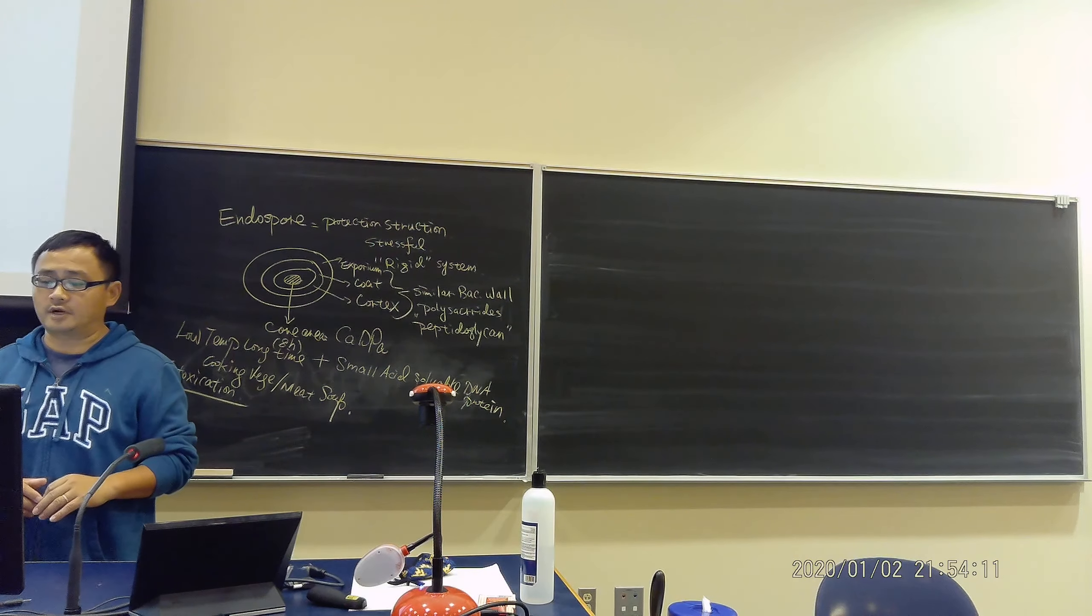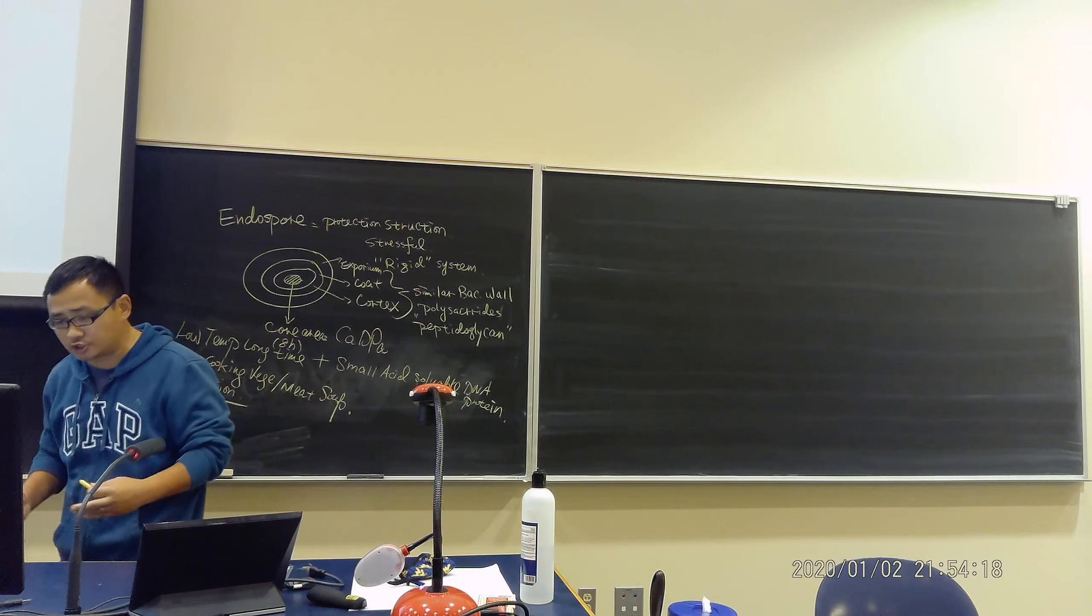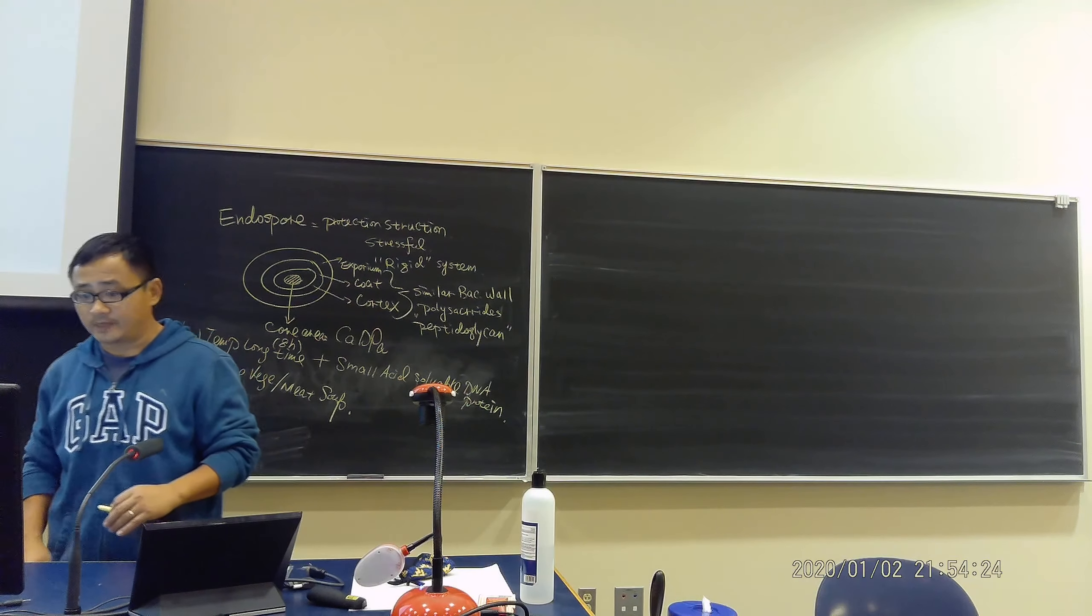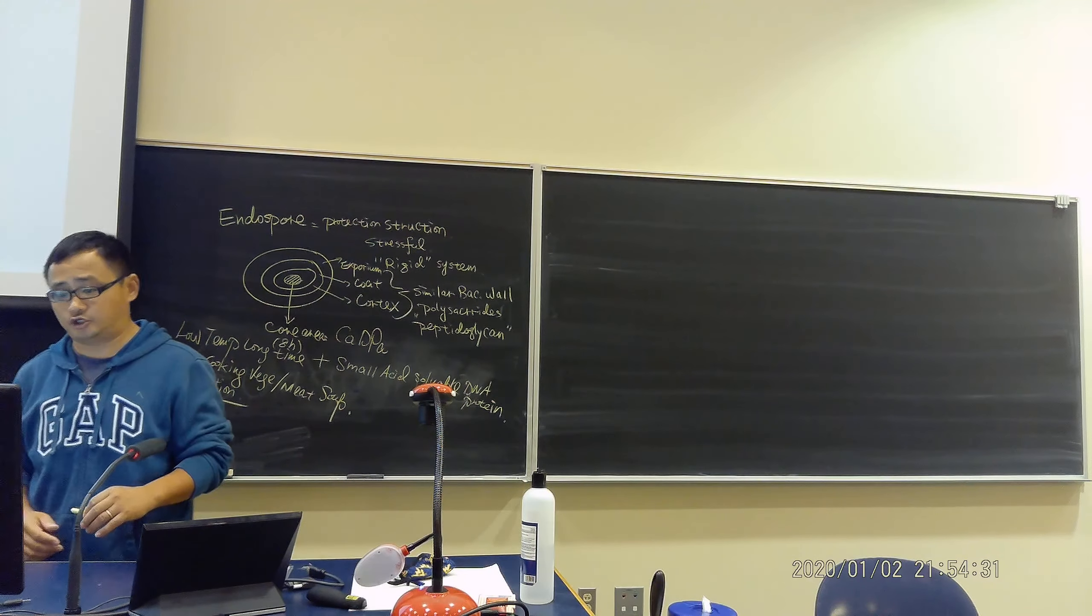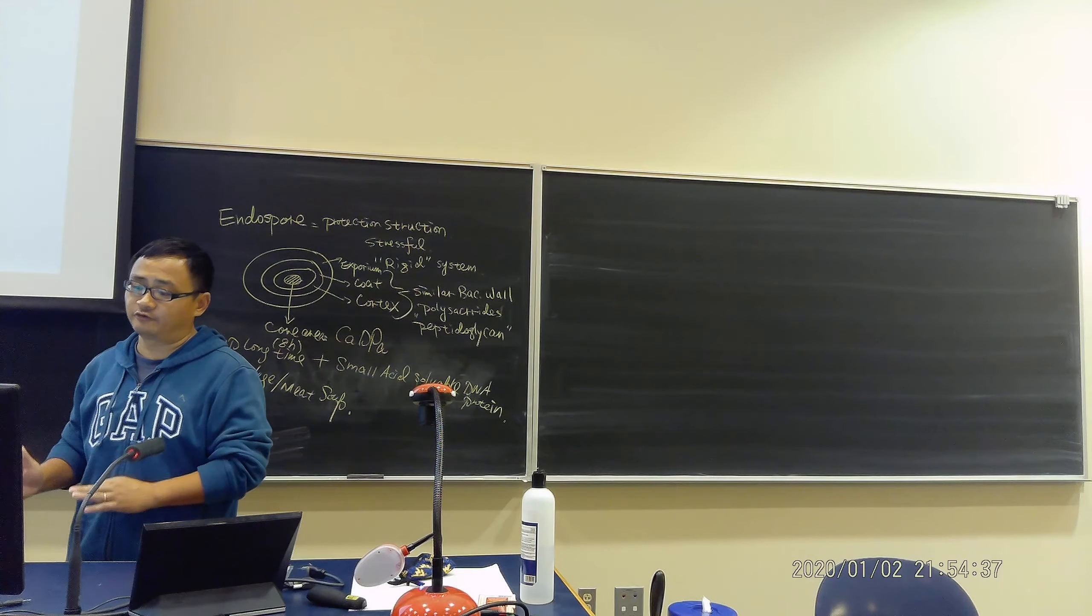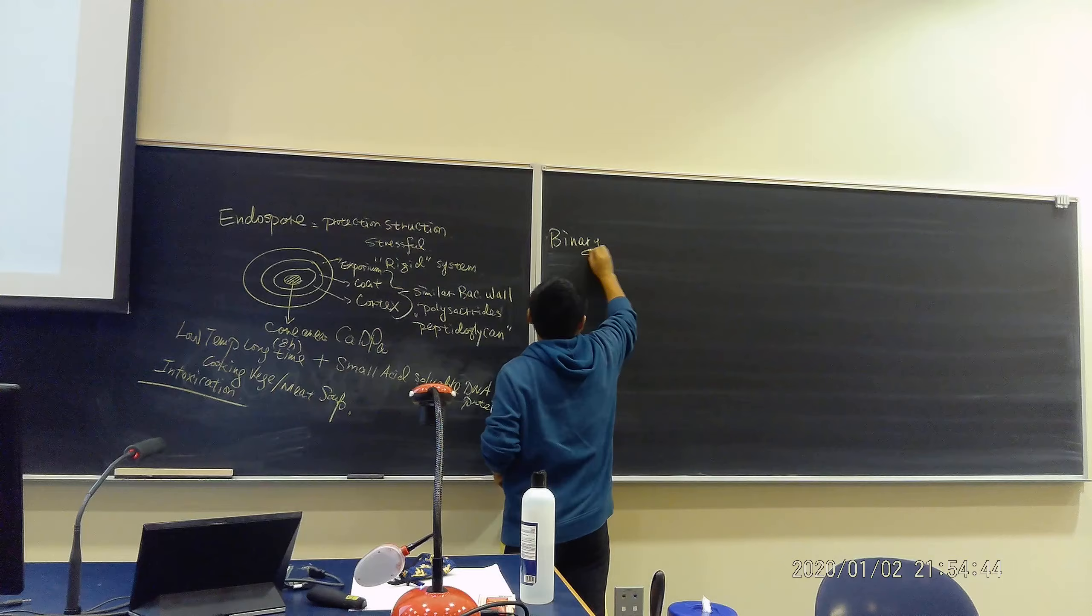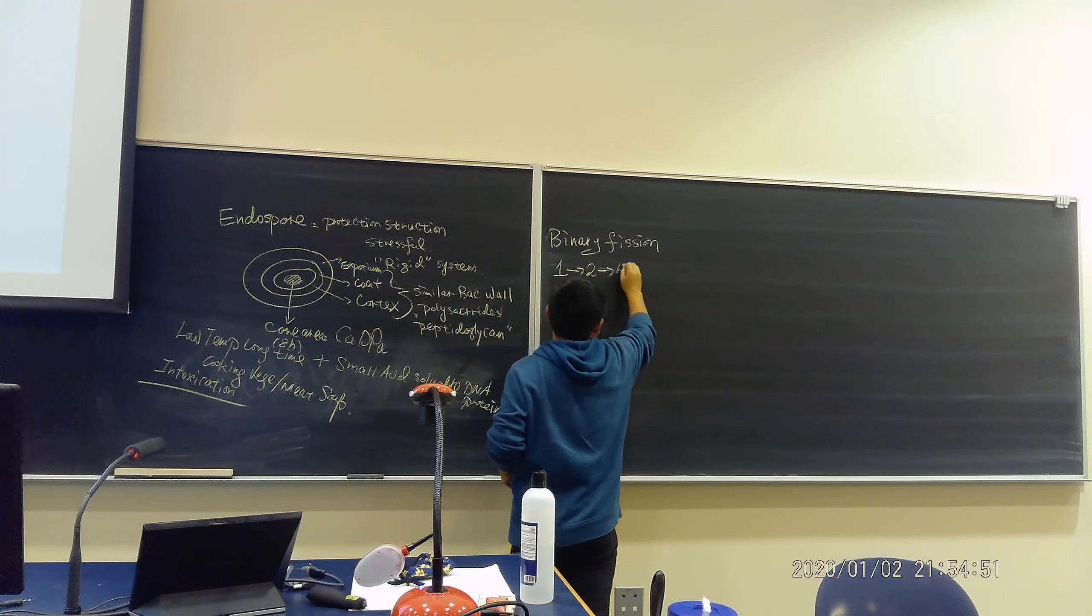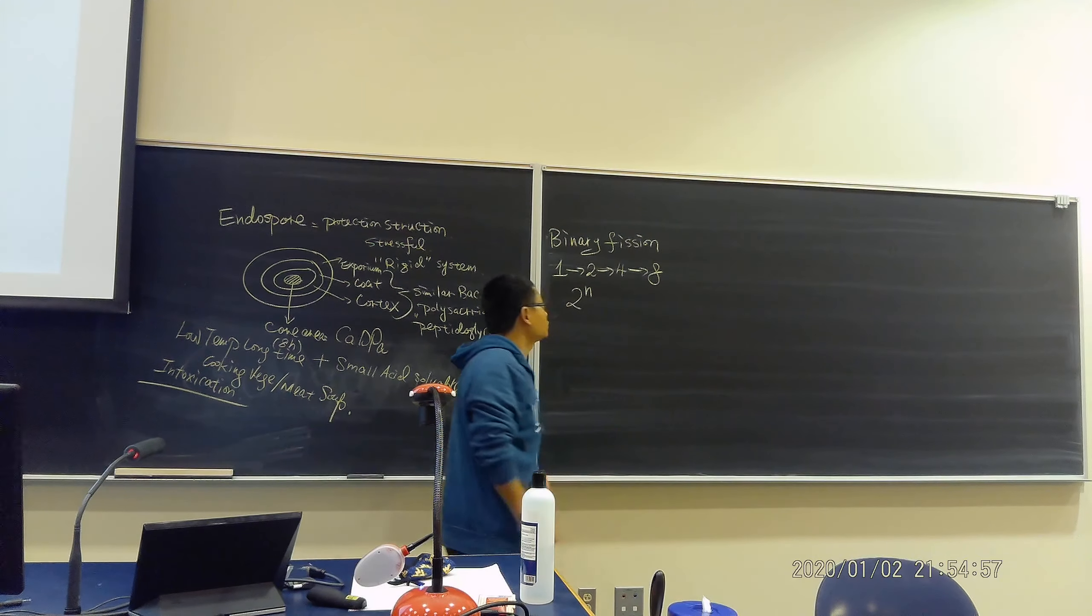Lecture four, we're going to talk about microbial growth, the factors to impact microbial growth. If we talk about nutrition, we will talk about bacterial medium. First of all, bacterial growth is called binary fission. Binary fission is very simple: one becomes two, two becomes four, four becomes eight. This is called binary fission, two times n.